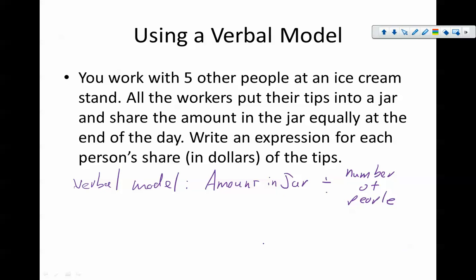So in this particular case, we can then replace the information that we know. Do we know the amount in the jar? No, we just know that there's some amount in a jar, which is going to be A. And then the number of people? Well, we do know the number of people. It's five. So we can replace that with five, and then we can just call this A over five.